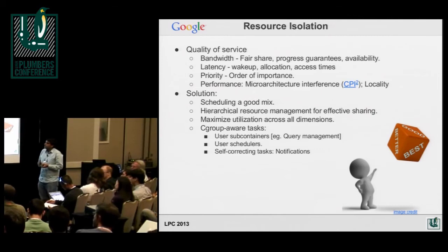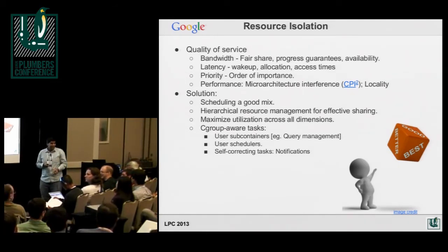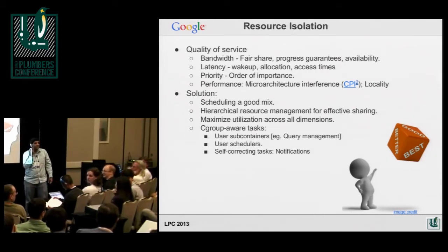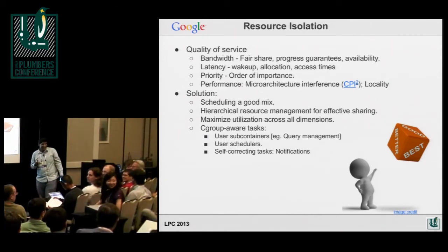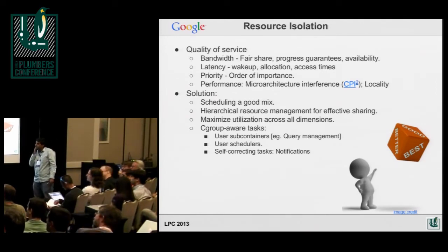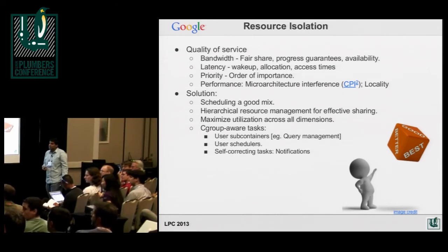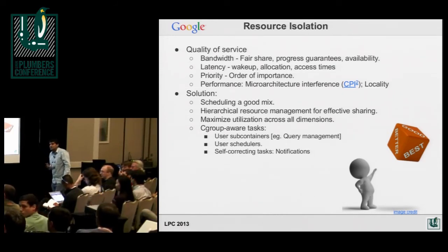A question arises about how this use case survives in a systemd world — systemd will probably never see the inside of Google's computers. The concern is that the push to change kernel interfaces we actually depend on would be a problem. However, the filesystem interface is still going to be there. There's always been a policy of not changing it. That's why we're highlighting it here — we use cgroups really, really everywhere.